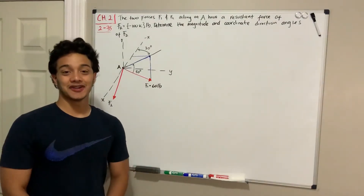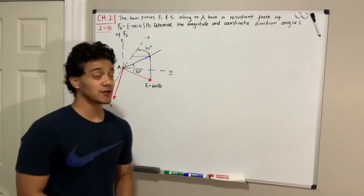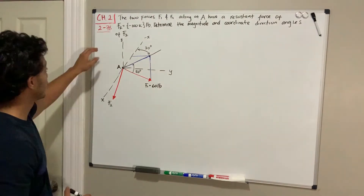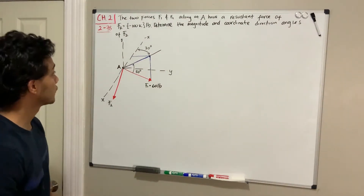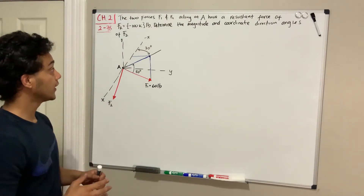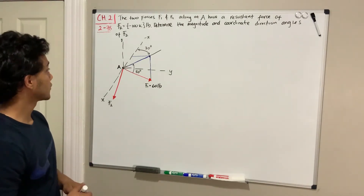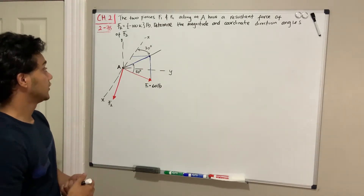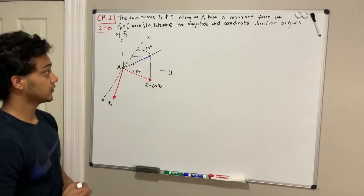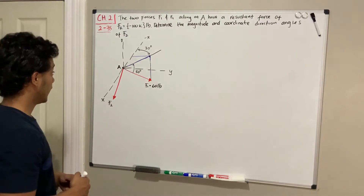Welcome back everyone to Learning by Teaching. We're doing statics and we're going to keep doing some 3D problems. We're going to do problem 278. It says the two forces F1 and F2 acting at A have a resultant force of negative 100 in the z direction. Determine the magnitude and coordinate direction angles of F2.